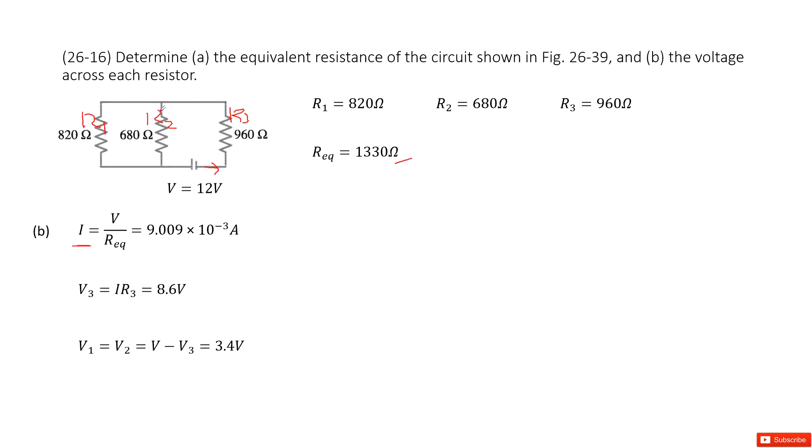Now we look at the voltages for V1 and V2. They are parallel connections. So V1 should equal V2 should equal the total voltage minus V3, 3.4 volts. Thank you.